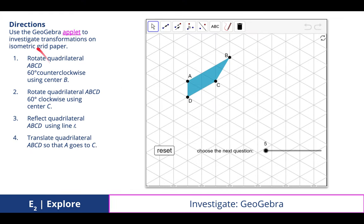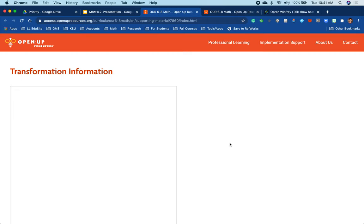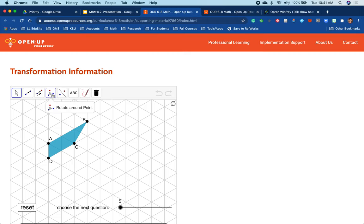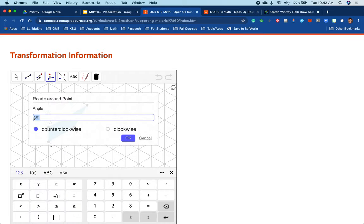Then there's a GeoGebra applet that investigates transformations on the isometric grid paper. So if we click on that, we can explore some transformations. Let's take a look at that and rotate about a point. So I'll take this figure and rotate about point B at 60 degrees.